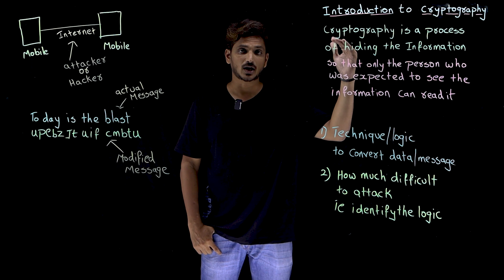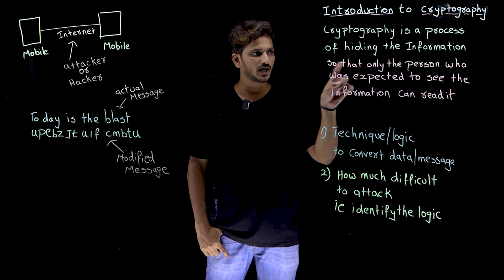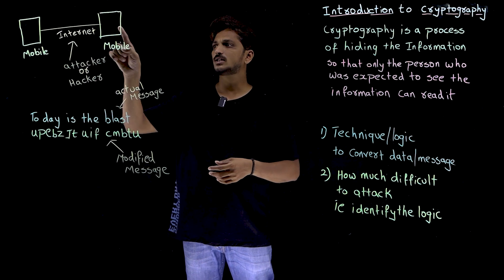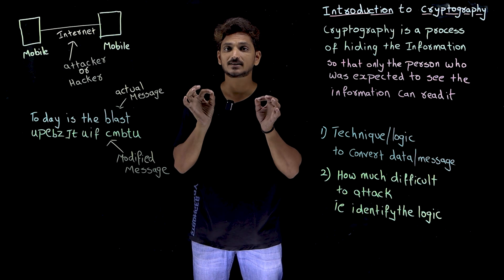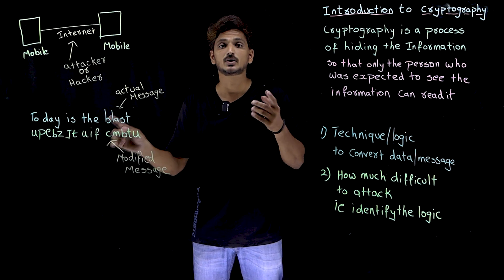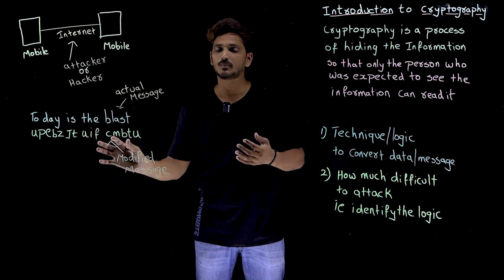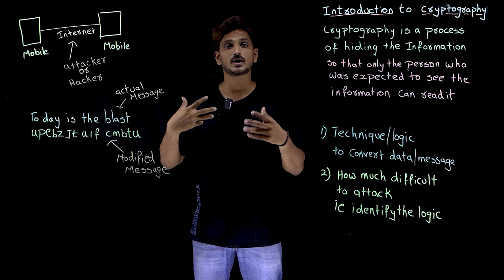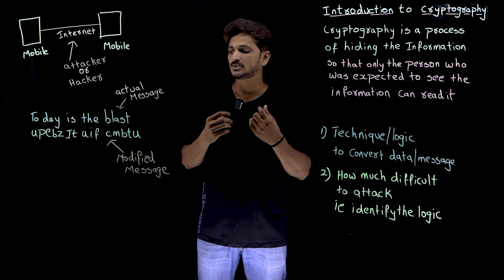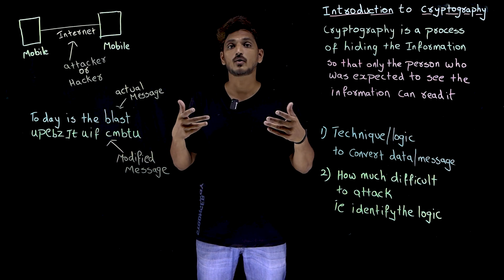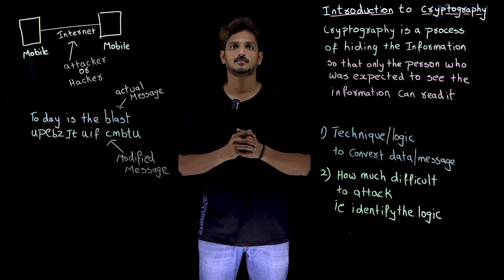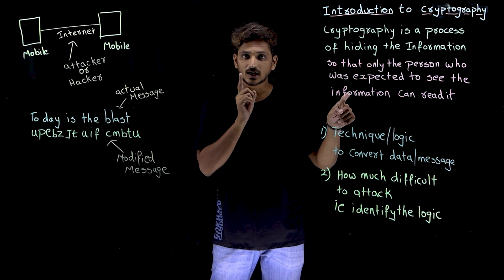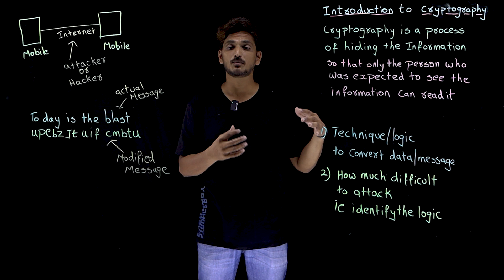Not only that — this is our first step. Coming to the second step: it is hiding the information so that only the person who was expected to see the information — only the person sitting at the other end — has the capability to understand our modified message. So he is able to convert the modified message back to the actual message. Even if the attackers take your message in the internet, it is very difficult for the attackers to identify the actual message from this modified message. This is how our cryptography technique should be. So — second point — only the person who was expected to see the message, only that person is able to read it. This is also provided by cryptography.